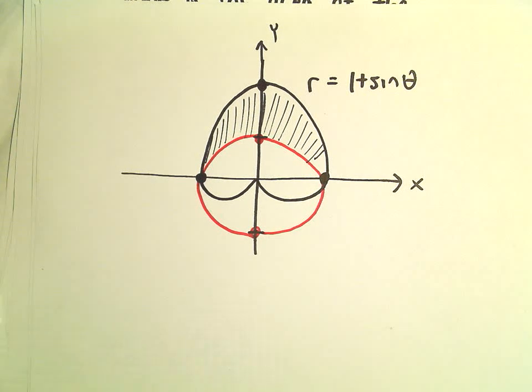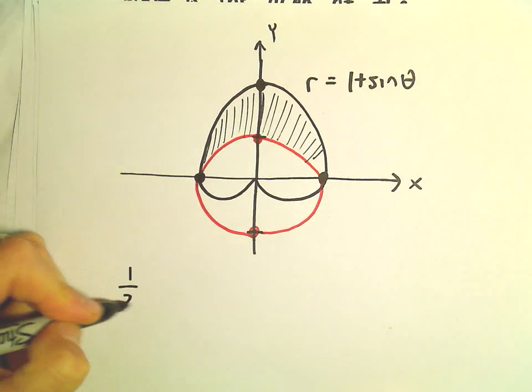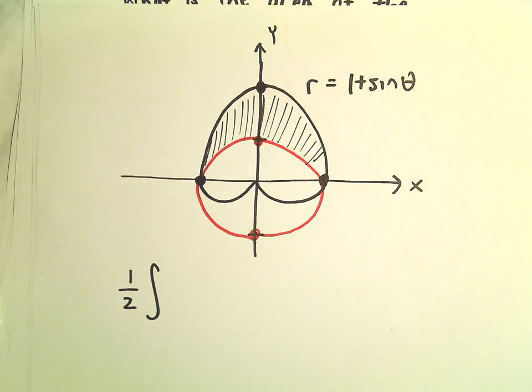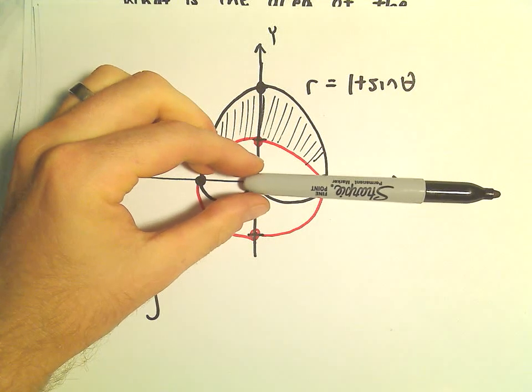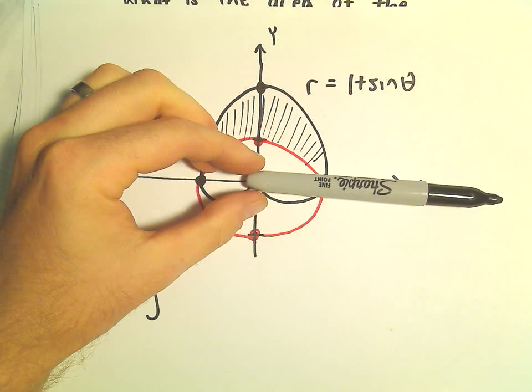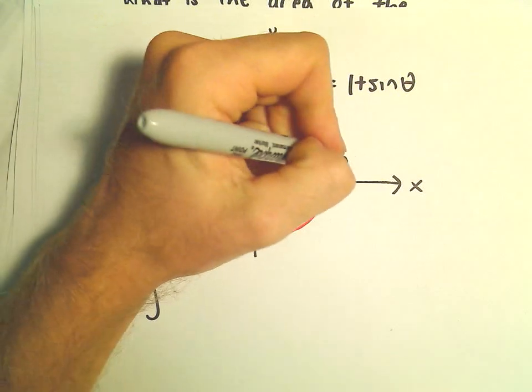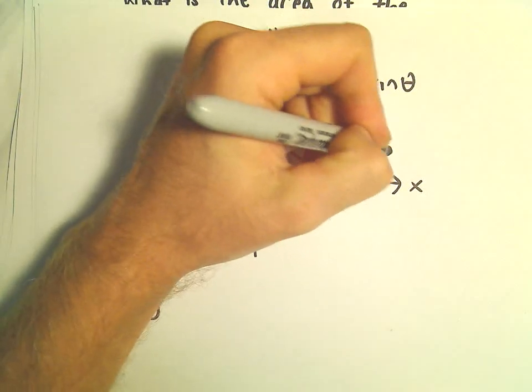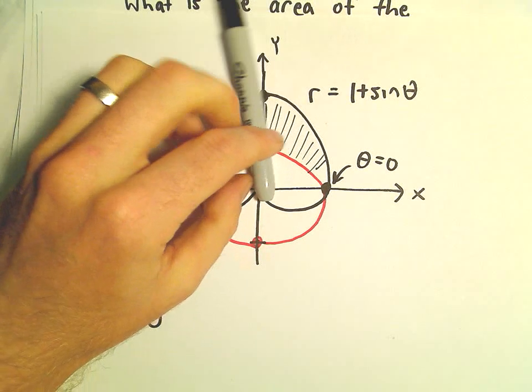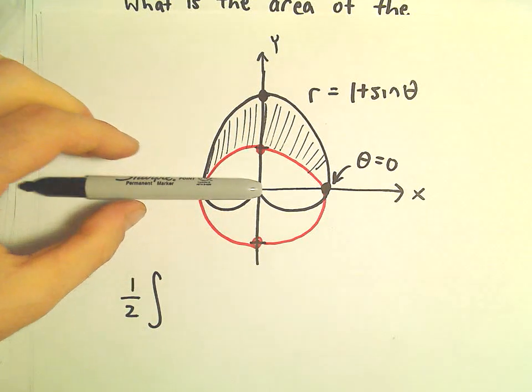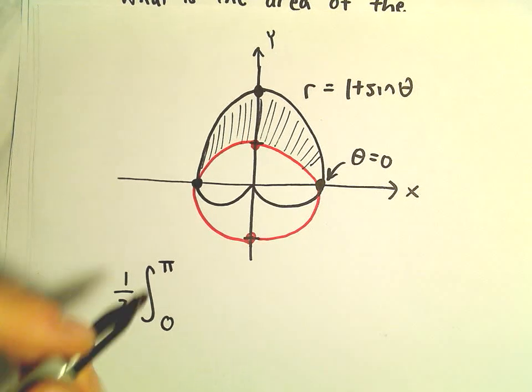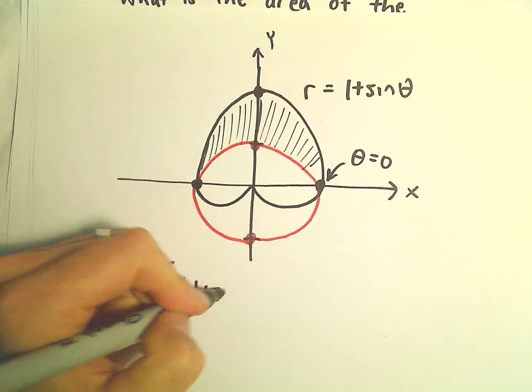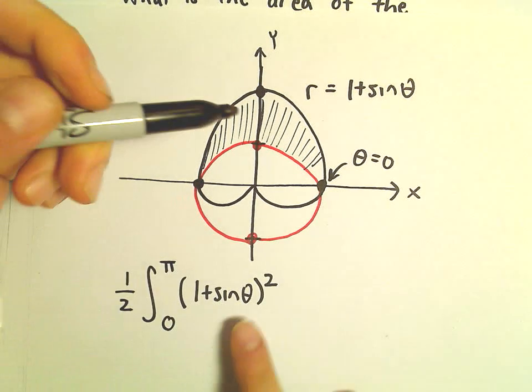Alright, so to set this up, we're going to have 1 half. So we've got to take one of our functions and square it. Notice these polar curves are going to intersect. This corresponded to theta equals 0. And the other point where they intersect is going to be at theta equals pi. So our limits of integration will be from 0 to pi. And then we'll take the 1 plus sine theta, quantity squared.